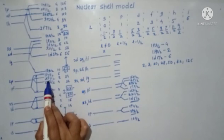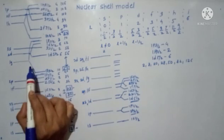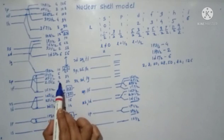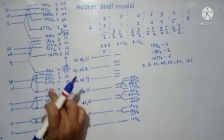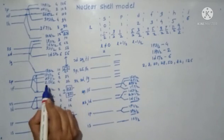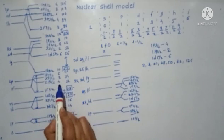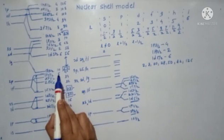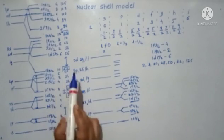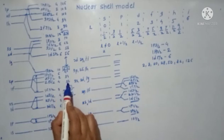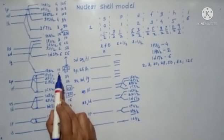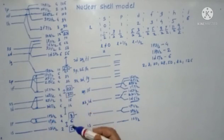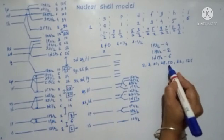Next, three energy levels are very close to each other and 1g 9/2 also comes very down, joining this group. So 2p 3/2 consists of 4 neutrons, 2p 1/2 consists of 2 neutrons, 1f 5/2 consists of 6 neutrons, and 1g 9/2 consists of 10 neutrons. So 28 plus 4 is 32, plus 2 is 34, plus 6 is 40, plus 10 is 50 — here is the fifth shell closure at 50.